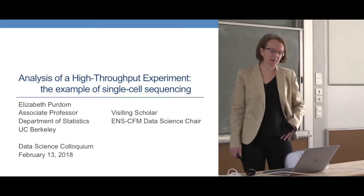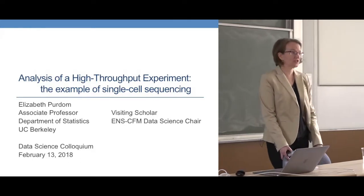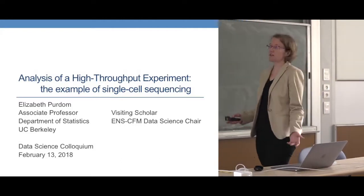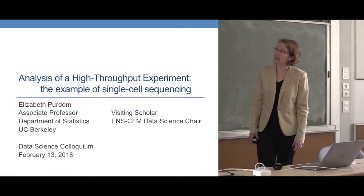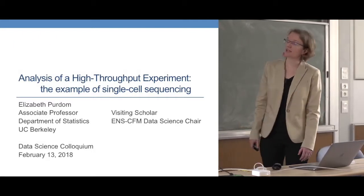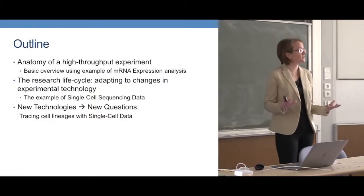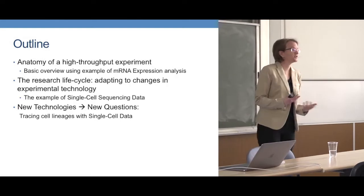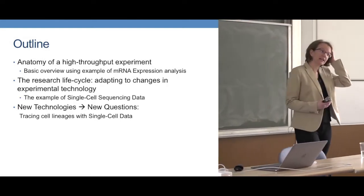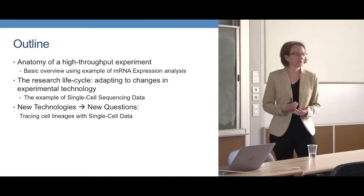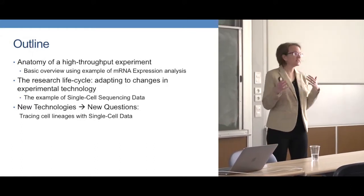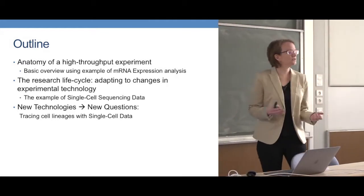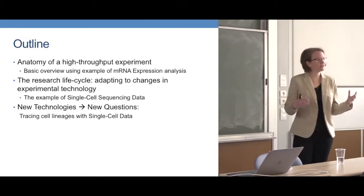I'm going to talk today about the type of research I do, which is largely around the analysis of a certain class of experiments in molecular biology called high-throughput experiments. I'll go over what those encompass, what kind of problems they are, and I'll go through an example that is central to my work, which is the expression of mRNA. I'll also try to give a sense of how research in this field changes and moves, as it's very dependent on the technologies.